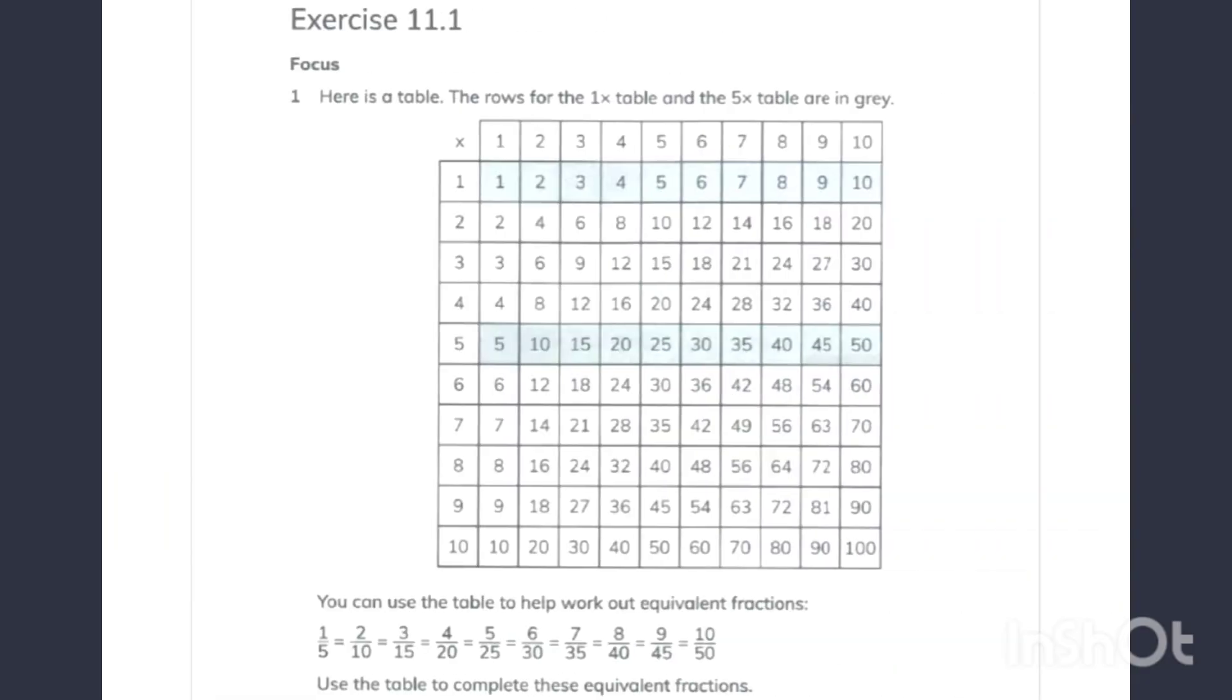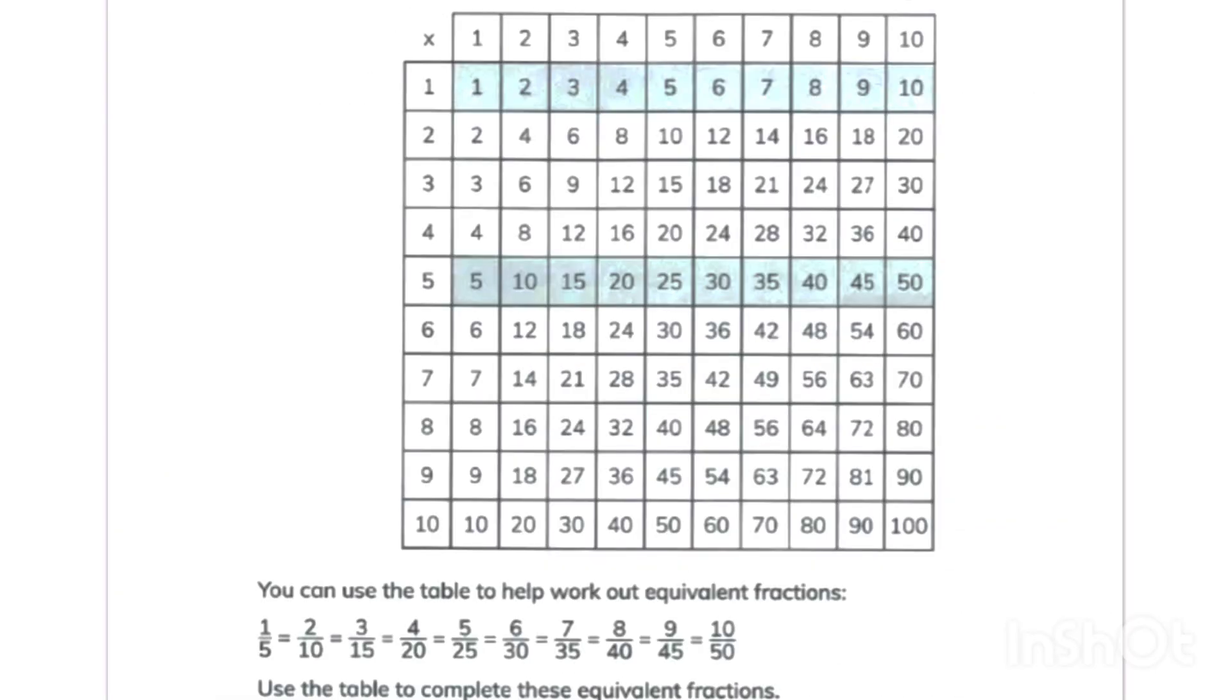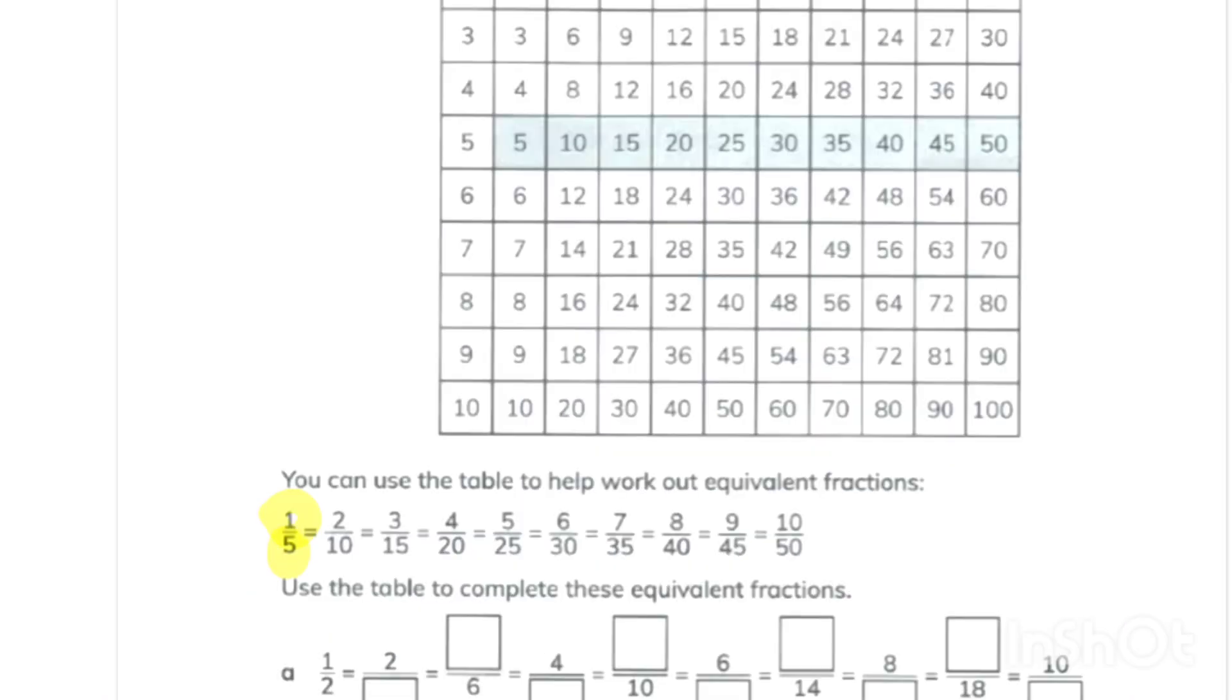Exercise 11.1 Question 1. Here you can see a multiplication grid in which multiples of 1 and 5 are colored. This question is about the understanding of equivalent fractions. Under the grid you can see some fractions 1 upon 5 when multiplied by 2 times. 2 times 1 is 2 and 2 times 5 is 10.